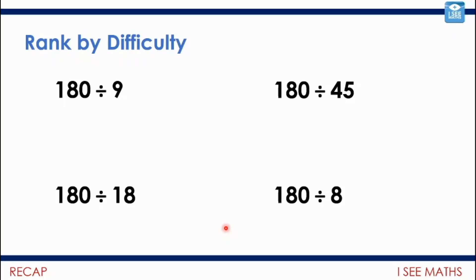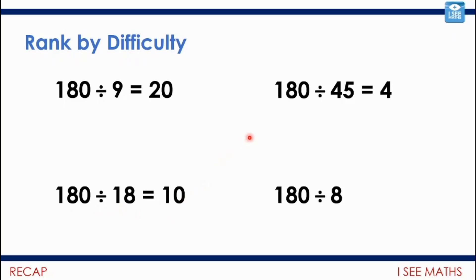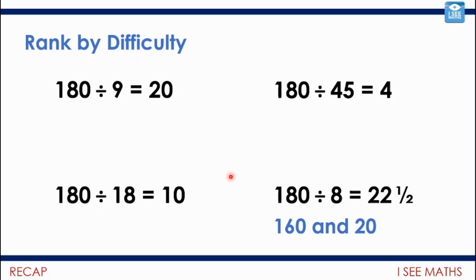Okay, let's have a look at them. So 180 divided by 9 — you can just use your times tables. 9 times 2 is 18, 9 times 20 is 180. 180 divided by 18 — if we see the relationship that 10 lots of 18 is 180, we can answer that using our understanding of place value. 180 divided by 45 — you can count up in 45s and work out there are 4 forty-fives in 180. And then 180 divided by 8 is a bit more challenging — I would split 180 into 160 and 20, and that gives me 22 and a half.